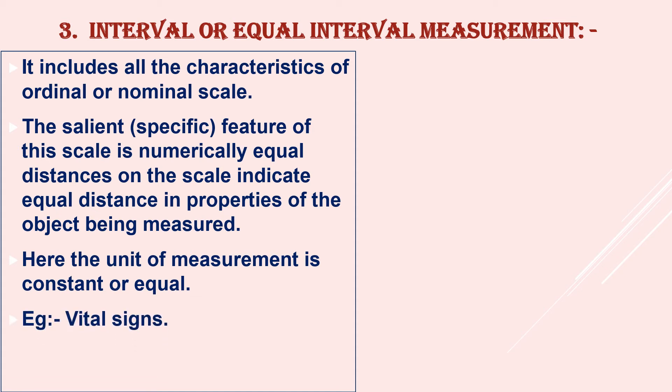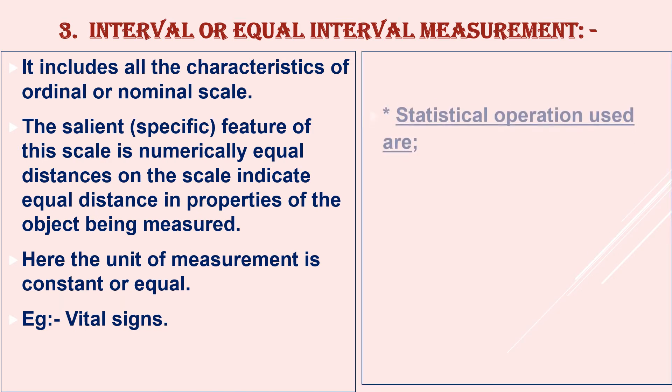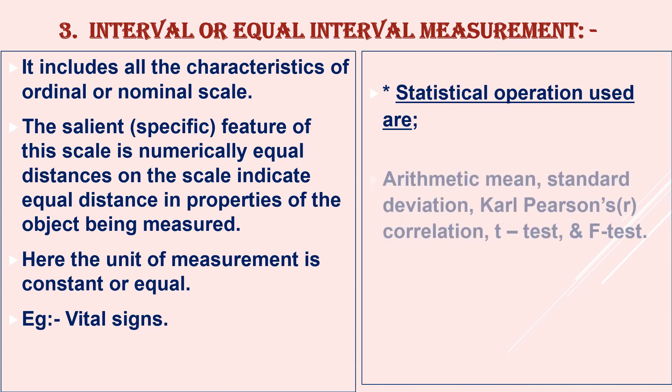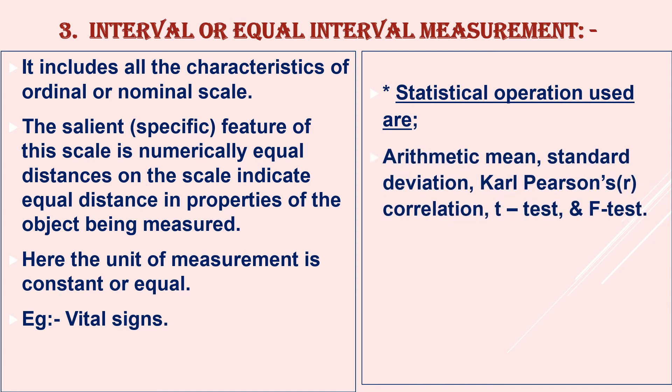The example of interval data is vital signs. The specific statistical operations possible are arithmetic mean, standard deviation, Karl Pearson's correlation, T test and F test. One of the major drawbacks of this scale is we cannot perform coefficient of variation with this interval kind of measurement or data.